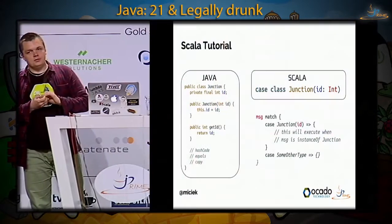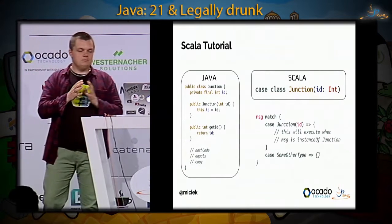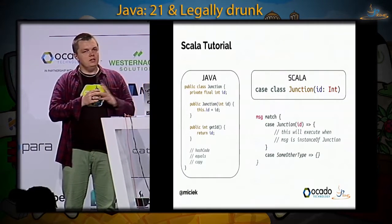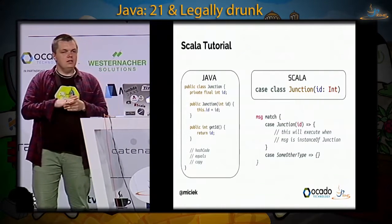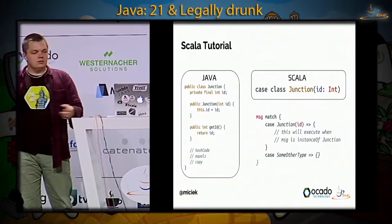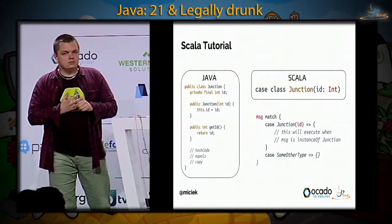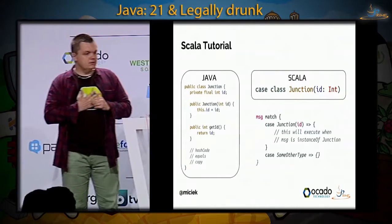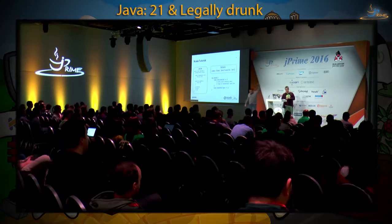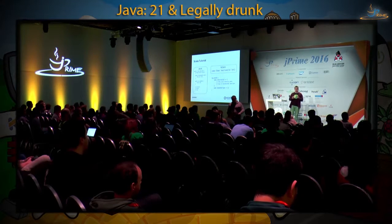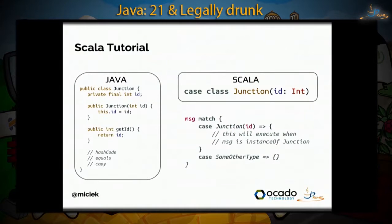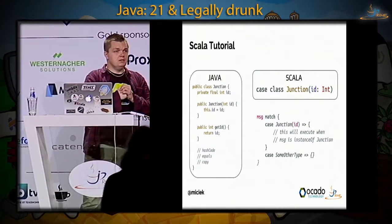The one-slide Scala tutorial has two parts. First, look at the left part of the screen — it's Java code for a simple junction class with one field ID, a constructor, a getter, hash code, equals, and copy methods. On the right, the Scala version is semantically the same — it's called a case class. Whenever you define a case class, it already has hash code, equals, and all those things. In Akka we use it all over the place, for example in pattern matching, which is the second concept.